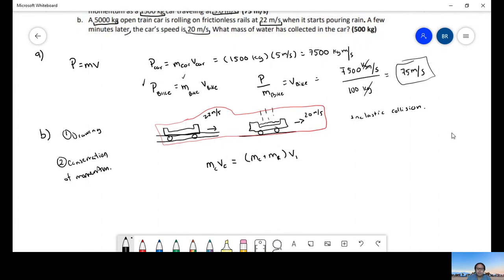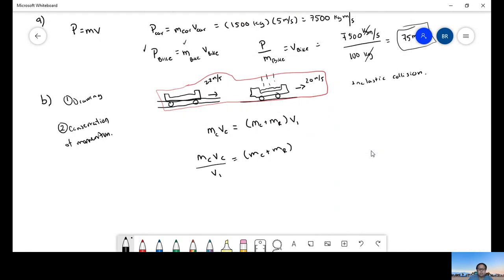Now we have to solve to find the mass of the rain. We're going to do mass cart times velocity cart over velocity one equals mass cart plus mass rain. We're looking for the mass of the rain. So we have mass cart times velocity cart over velocity one. This is the mass of the car, mass times velocity of the car and velocity final, and we're going to be subtracting the mass of the car. This is equal to the mass of the rain.